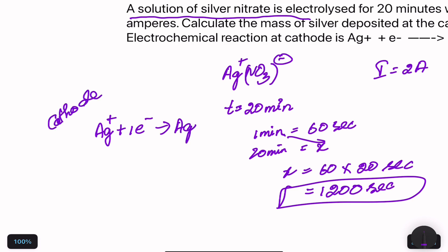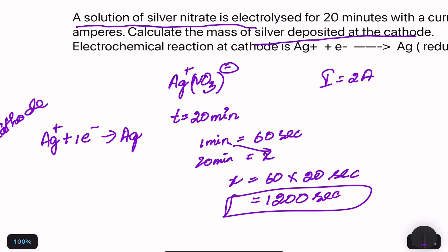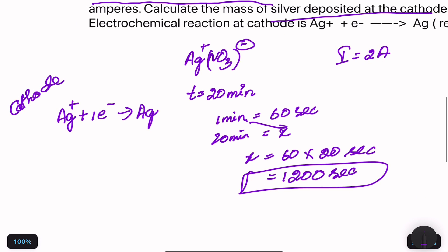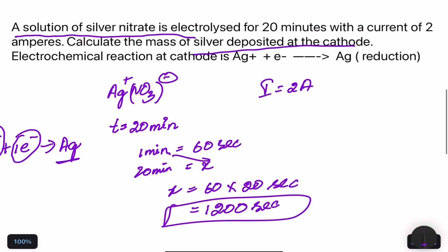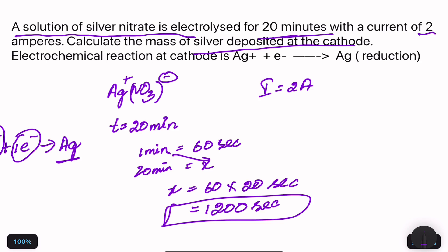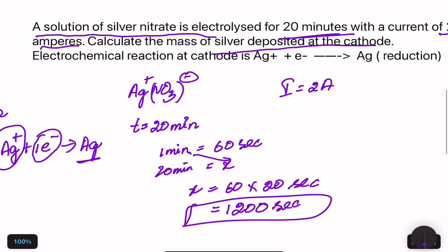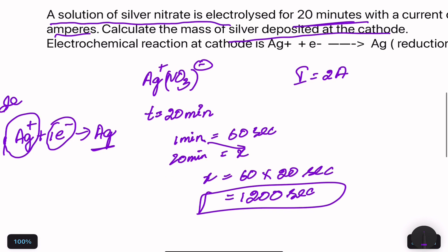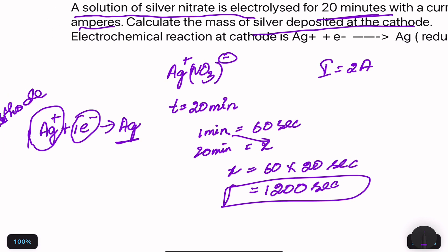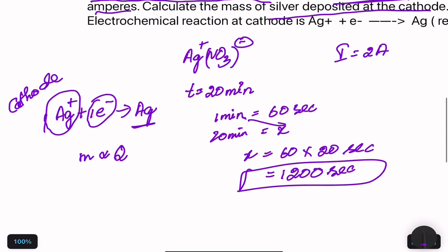One mole of Ag⁺ reacts with one mole of electrons to deposit one mole of silver. According to Faraday's first law, mass deposited is directly proportional to the charge passed. The charge Q is equal to current i multiplied by time t, so Q = i × t.